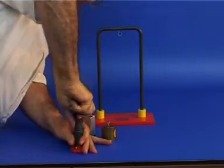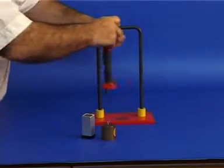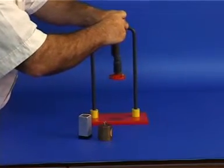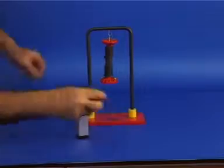Now, attach the top rod to the hanger and the half kilo weight to the bottom rod.